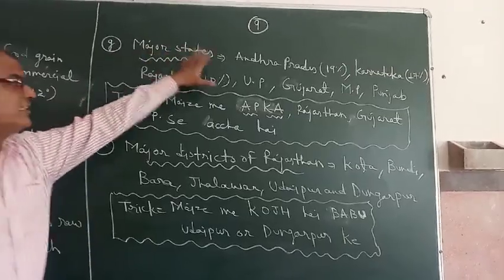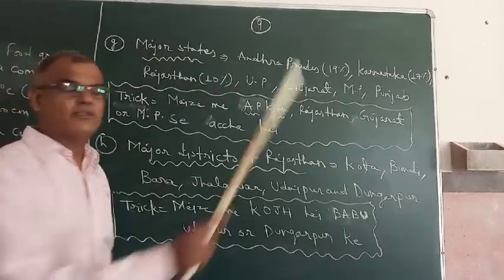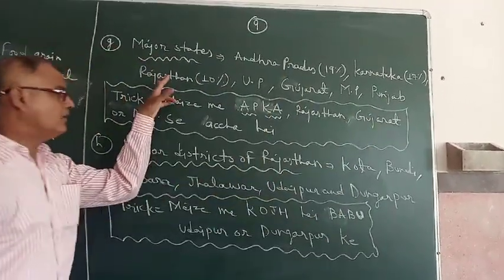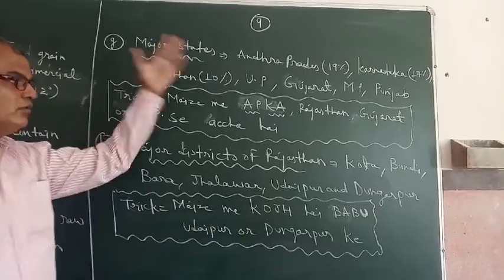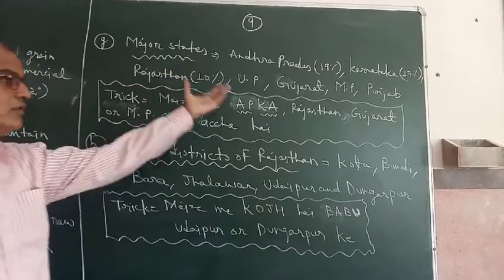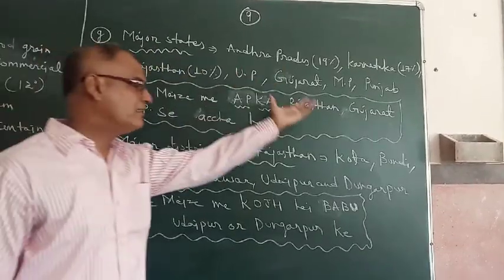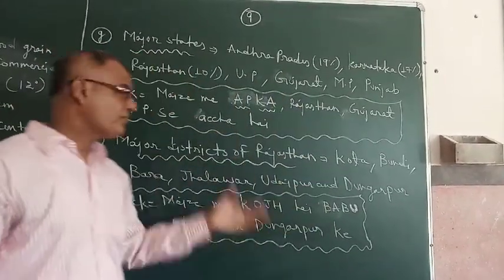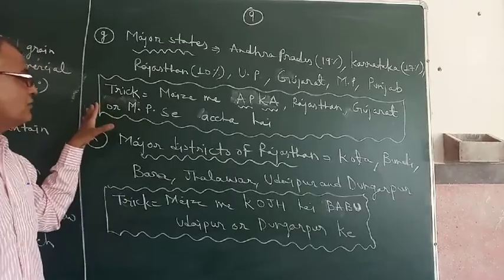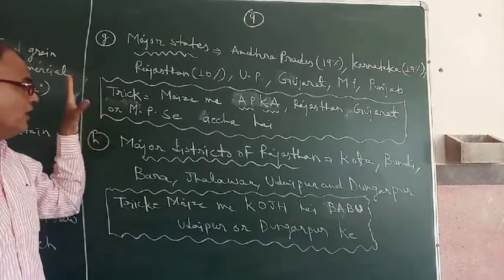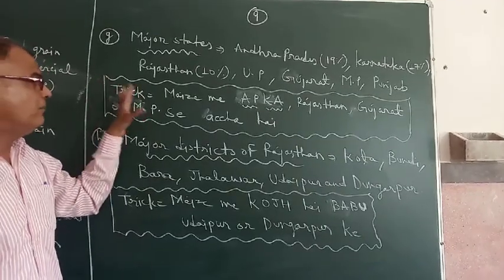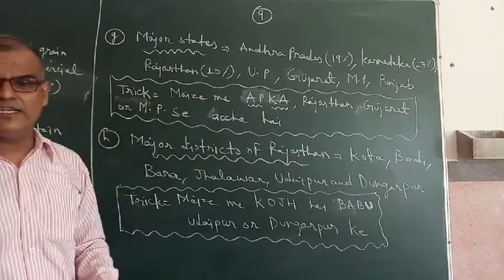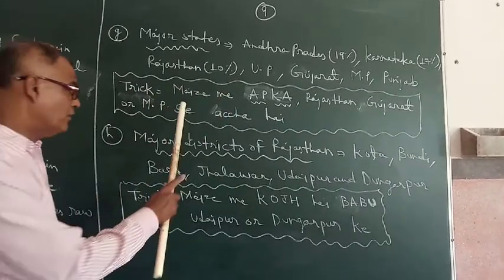Maize producing states of India are: Karnataka, Rajasthan, Uttar Pradesh, Gujarat, Madhya Pradesh, and Punjab. We have a trick to learn the Maize producing states of India — you can learn the following sentence.